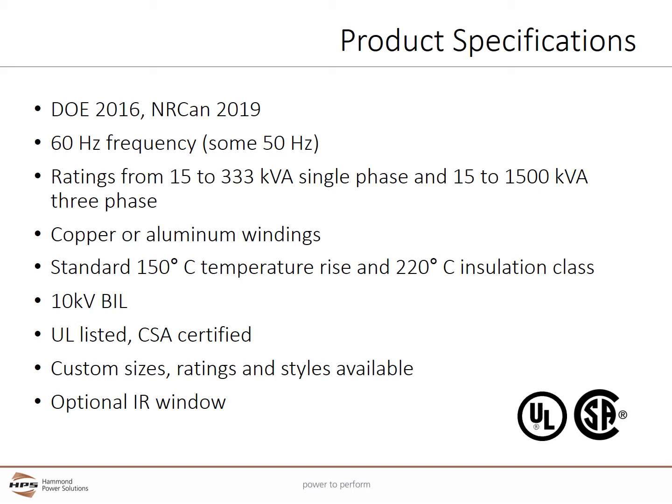Ratings are from 15 to 33 kVA single phase and 15 to 1500 kVA three phase. Copper or aluminum windings are available. Standard 150 degree C temperature rise and 220 degree C insulation class is used. Lower temperature rises are available. 10 kV BIL means the insulation system is designed to handle a 10,000 volt spike and not arc. All units are UL listed and CSA certified. Custom sizes, ratings, and styles are available upon request.